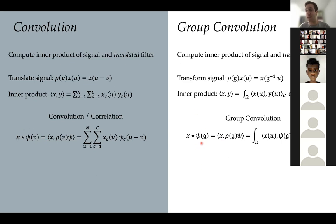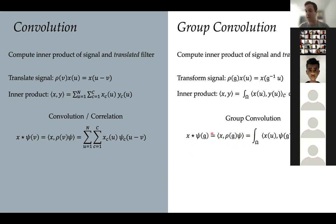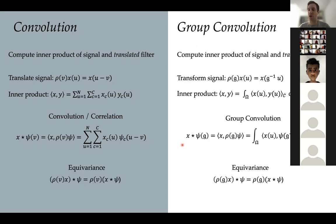For second and higher layers, our group convolution must also handle functions on the group. If x is a signal on the group and ψ also, then we define a certain action ρ — the regular representation — and the same definition still holds. You can show that this is equivariant; we'll look at that in more detail shortly.